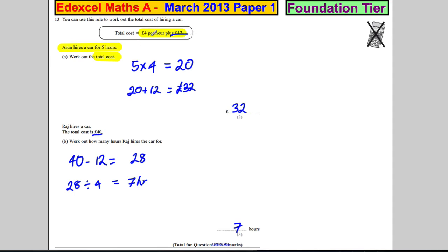8: 8 times 4 is 32, plus 12 is 44, too much. 7: 7 times 4 is 28, plus 12 is 40. So you can think of it forwards or backwards.